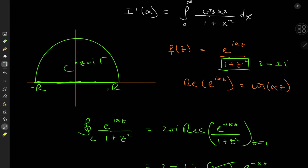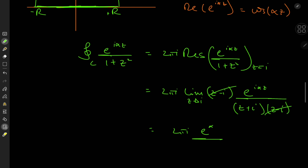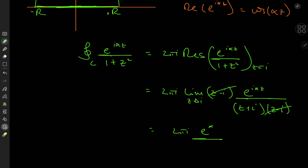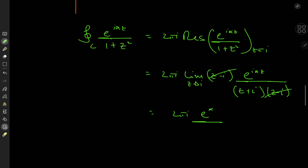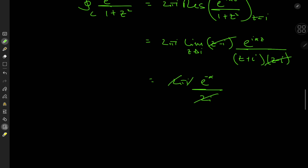With the i squared term, we have a negative alpha up top, and downstairs 2i, which cancels quite nicely. So the integral over the closed contour C equals pi times e to the minus alpha, which does look interesting.